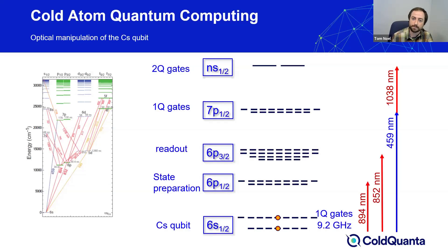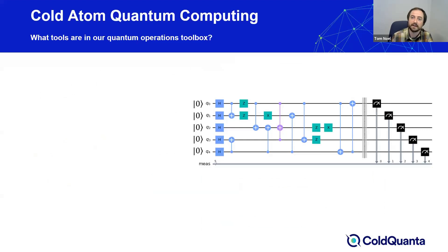To do all the different operations the quantum computer needs and satisfy all the DiVincenzo criteria, we need to access other atomic energy levels. The figure on the left shows the full spectrum of cesium, and the cartoon on the right highlights the levels we'll actually be using, along with the operations they're involved in. I'll walk through this operation by operation using that arbitrary quantum circuit shown earlier.